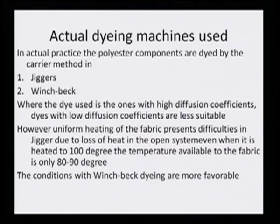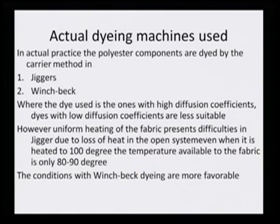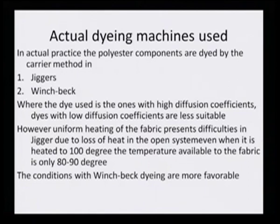Uniform heating of the fabric presents difficulties in Jigger due to heat loss in the open system. Even when heated to 100 degrees, the temperature available to the fabric is only between 80 to 90 degrees, and polyester requires high heating. Jigger is therefore not one of the best machines, though if one has only Jigger in the dye house, polyester dyeing can still be done. Conditions with Winch are much more favorable compared to Jigger.